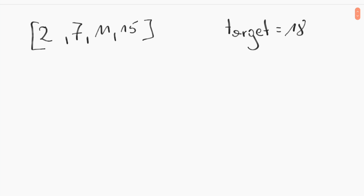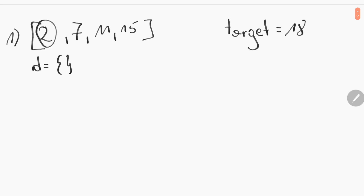Let me show how it looks in the real world. In the first step our dictionary is empty. We take the first value from the array — it's 2. Target minus 2 is 16. We check if the dictionary contains a key equal to 16 — it doesn't. So we put 2 into the dictionary.